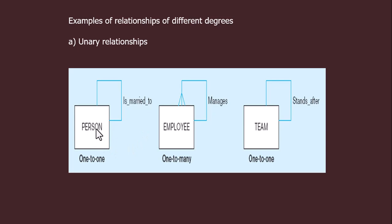You can see this figure — this is an example of unary relationships. Here the person-to-person relationship is always one-to-one. For example, a person married to a person is a one-to-one relationship. Both entities in this case will be persons.